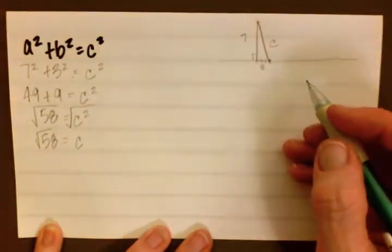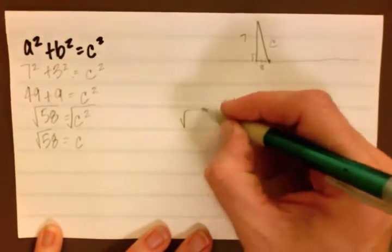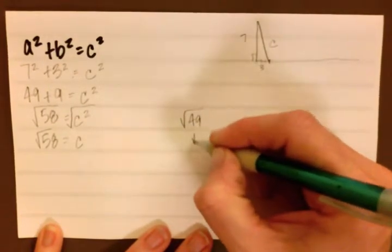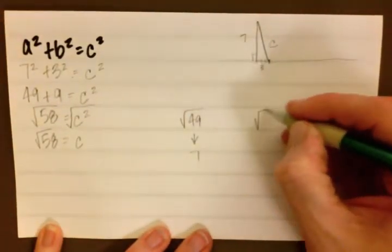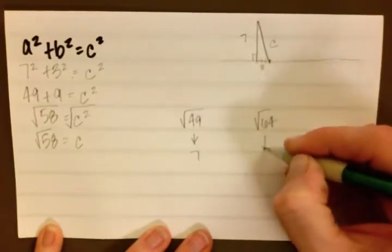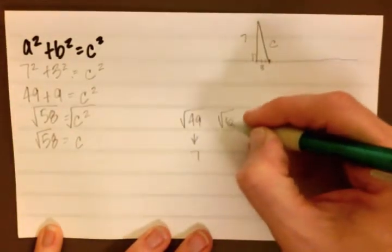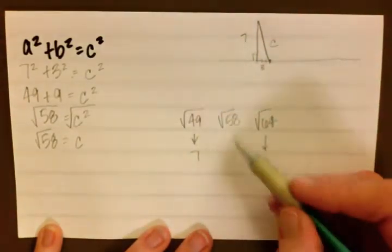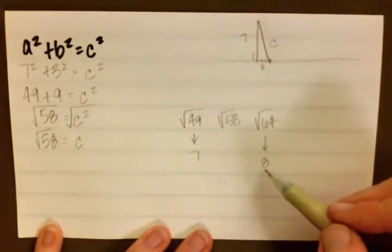Now let's just think about this for a little bit. The square root of 49 is 7, and the square root of 64 is 8. Our answer is the square root of 58, right here in between, so we know that our answer is going to fall somewhere between 7 and 8.